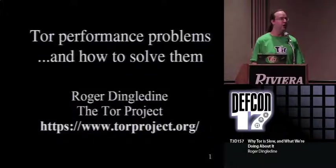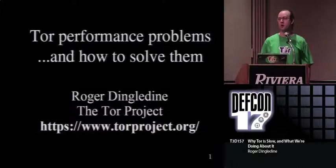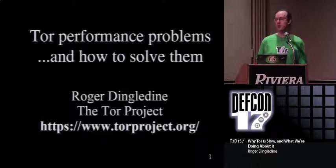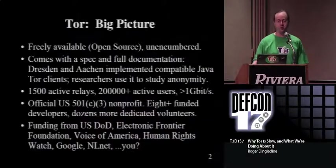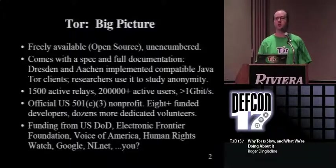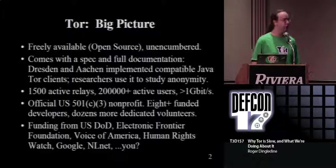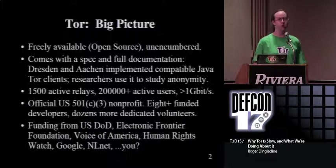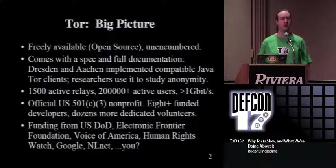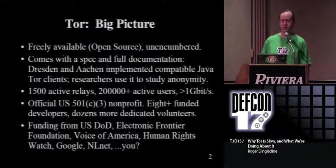I'm Roger Dingledine from the Tor Project. I'm going to tell you a little bit today about how Tor works and why the performance problems are what they are. I'm mostly going to focus on a crash course on Tor, just to give you the three-minute overview of what it is, and then give you all sorts of problems we've been trying to figure out. Tor is free software, open source. There are about 1,500 to 2,000 relays all around the world pushing traffic for a few hundred thousand users. It's hard to say for sure because it's an anonymity system, and we've been working on how to count users safely.